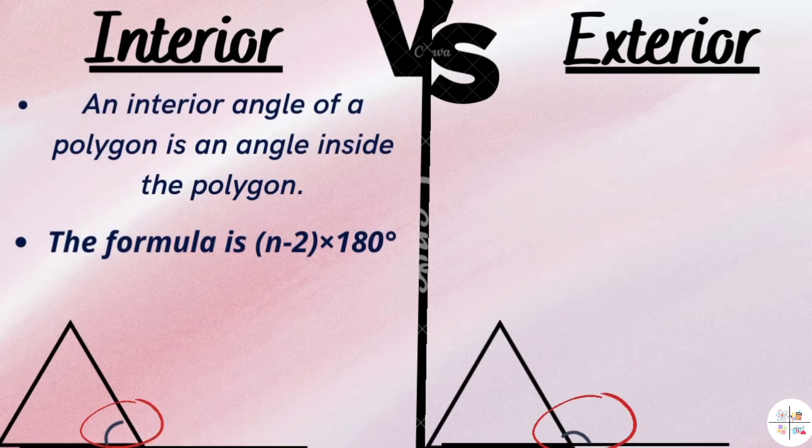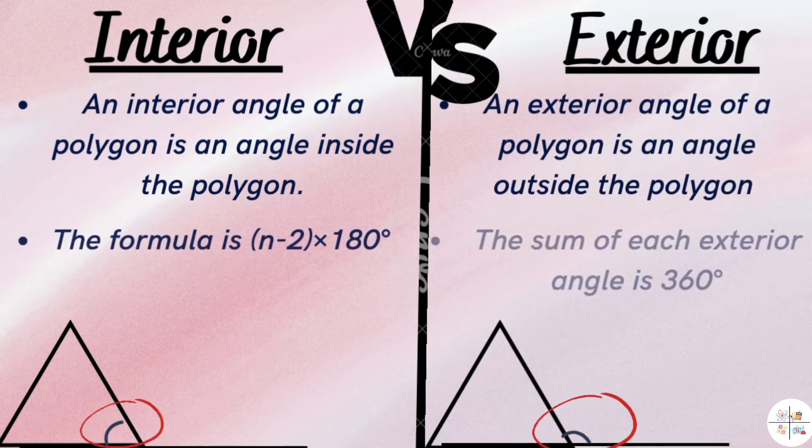Interior angle of a polygon is an angle inside the polygon. The formula is (N-2) × 180 degrees.